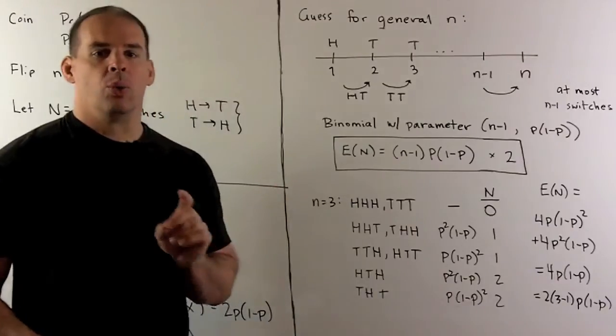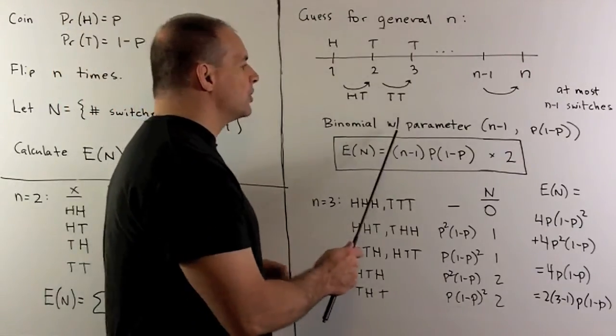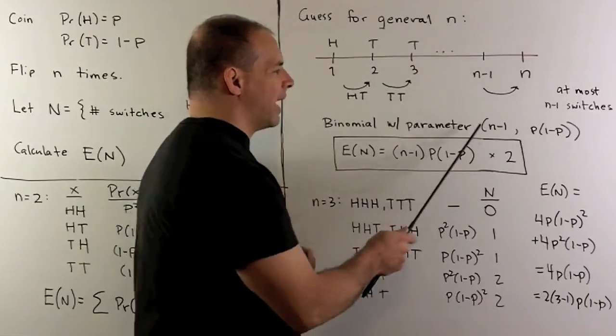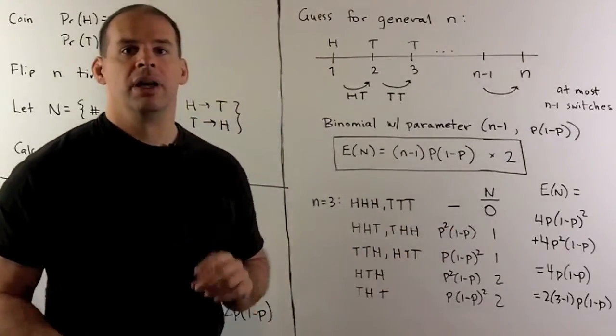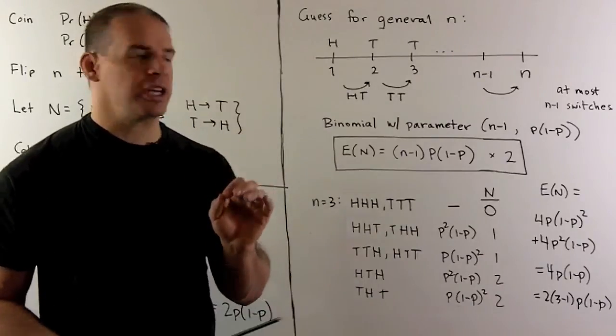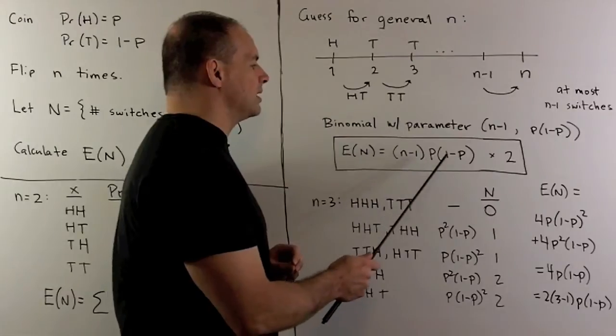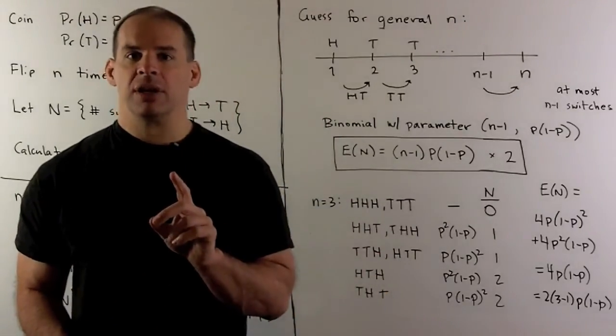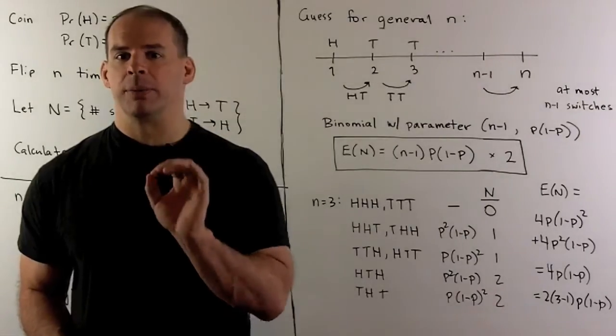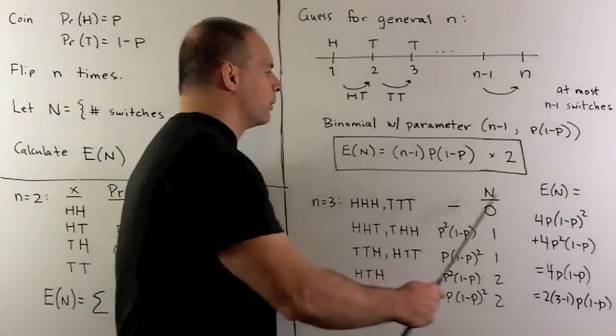That means, when our first flip is a heads, we're going to have a binomial distribution with parameters N minus one, P times one minus P. This distribution has expectation equal to the parameters. So, we'll have N minus one times P times one minus P. Because we have two cases, first flip is a heads or first flip is a tails, we multiply by two. And this is going to be our formula of interest.